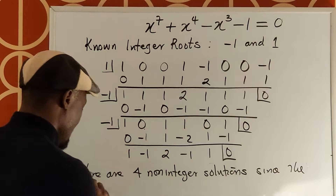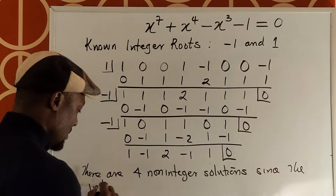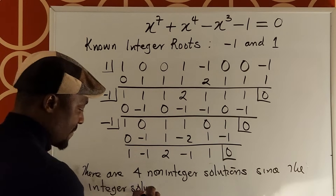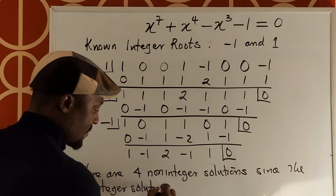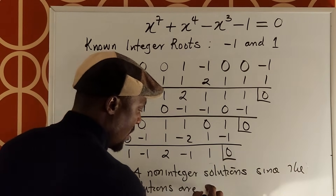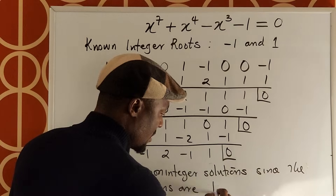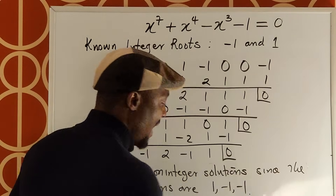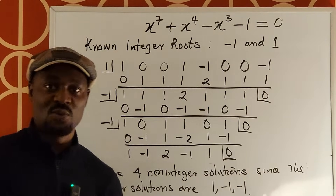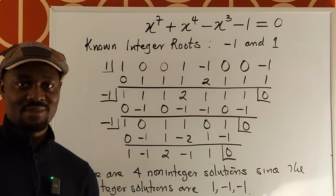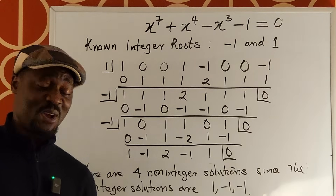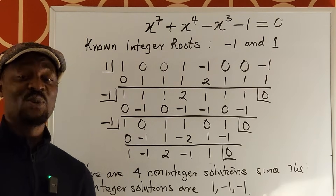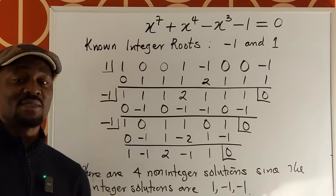The integer solutions are one, negative one, and negative one — with negative one having a multiplicity of two. Therefore, there are four non-integer solutions. Leave your comments in the comment section. Never stop learning — those who stop learning, stop living.